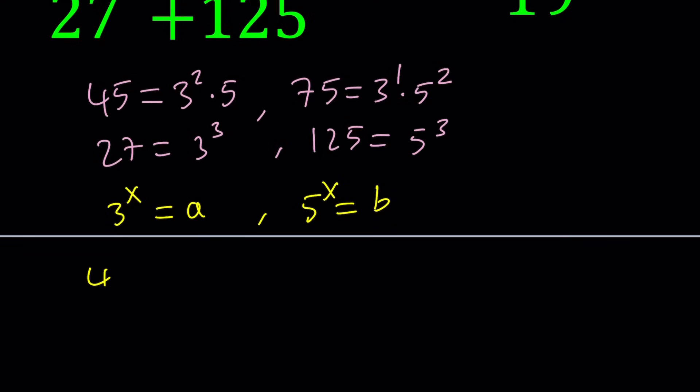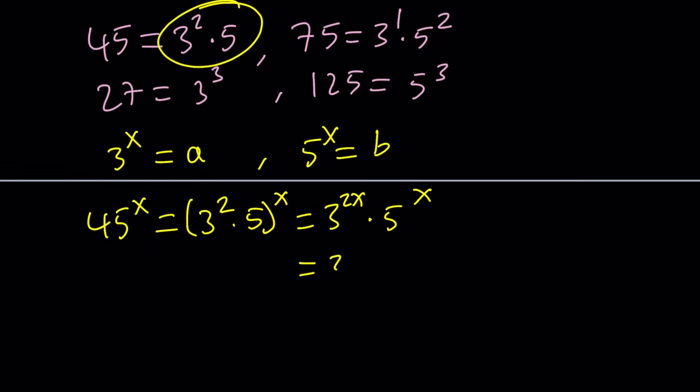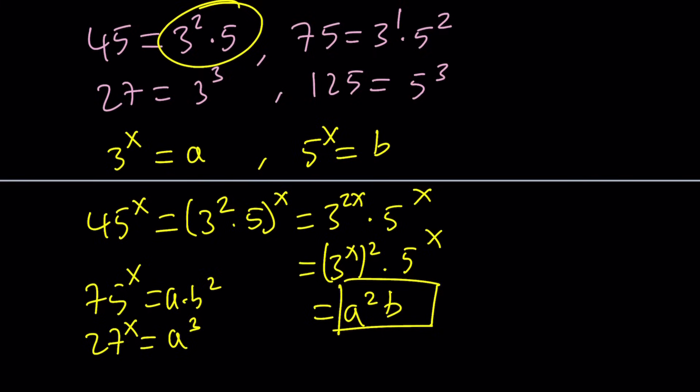Now, what happens to 45 to the power x? We can write this as 3 to the second times 5 to the power x, then this becomes 3 to the power 2x if you distribute the exponent, times 5 to the x. Since 3 to the x is a, this is basically a squared times b. So 45x is going to look like this, 75 to the power x is basically going to be a times b squared, 27 to the x is going to be just a cubed, and finally, 125 to the power x is just going to be b cubed.